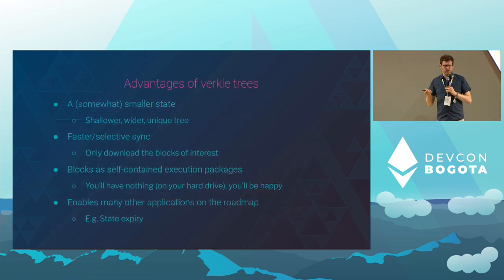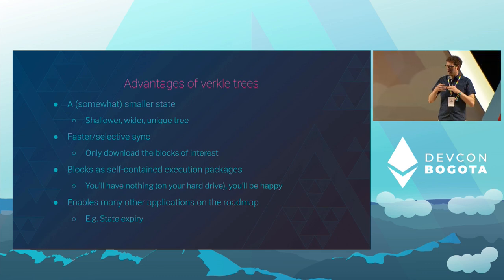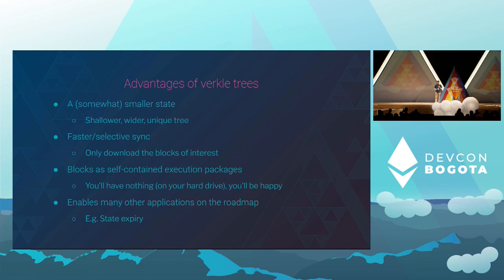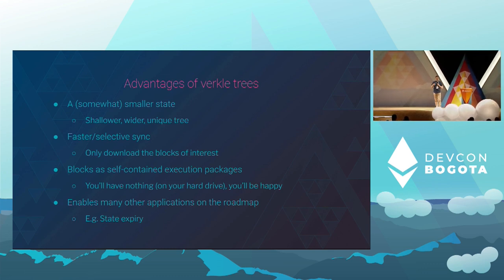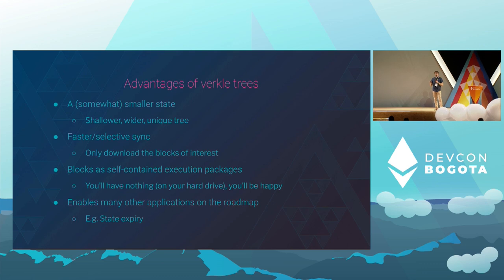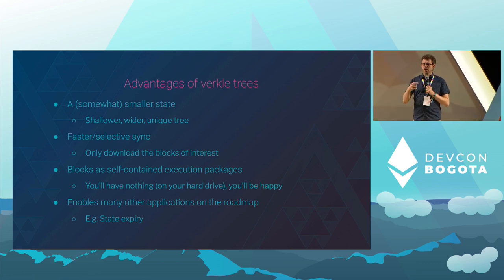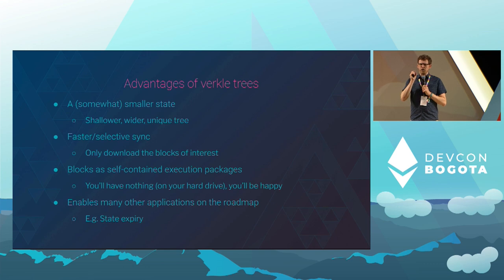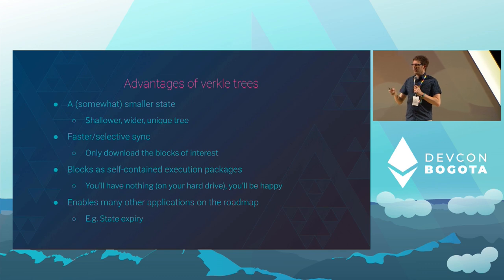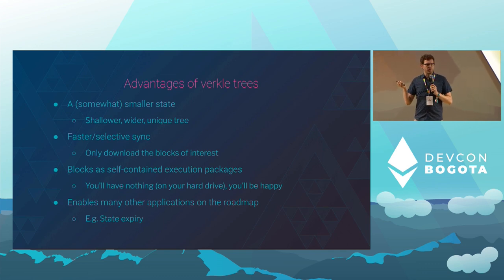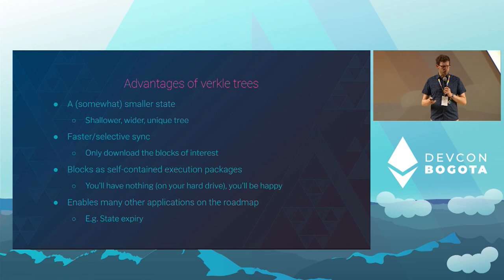Just to recap: Verkle Trees are nice because you can make the tree much more shallow. You can also build interesting applications — for example, you can just download the blockchain without caring about the state, and look at the witness in the block to figure out if that block is accessing something you're interested in. For example, if you're interested in the CryptoKitty contract, you execute that block to update your internal state. If not, you don't care.